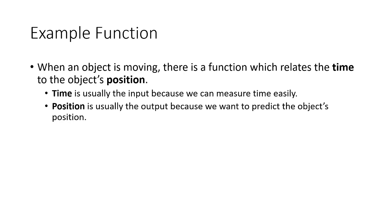In a situation like that, there is a relationship between the time that's passed and where the object is located. We typically use time as our input variable because time is usually the quantity that we know or can measure very easily using just a stopwatch. The output quantity is usually assigned to position, because position in this example is usually the quantity that we want to predict or sometimes influence.